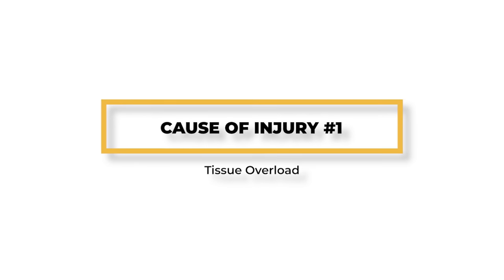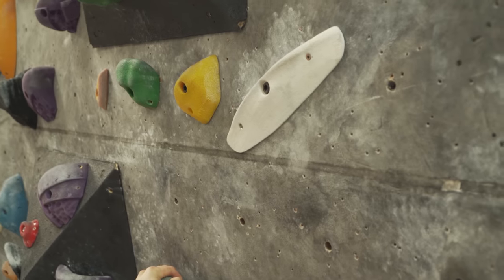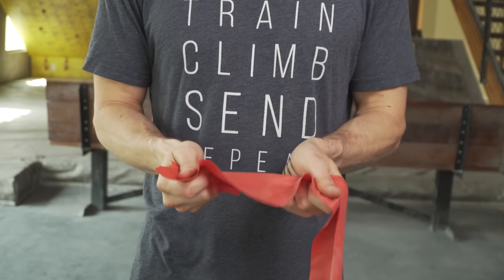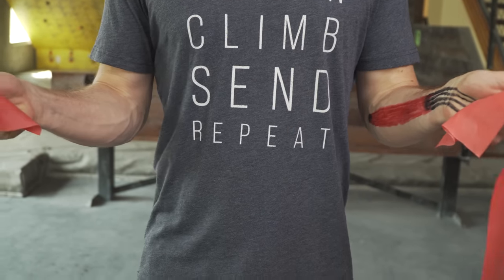So we know what the risk factors are, but how does the FDP actually get injured in the first place? There are three main causes. The most common cause of injury is simply exceeding the tensile strength of the FDP. This can happen when your foot blows off a hold, which suddenly transfers all that load to your fingers. It could also happen when you don't or can't get all of your fingers on a hold, meaning that the load can't be spread across your fingers. Either way, when the tissue gets overloaded, something's got to give — and in this case, that means the tissue tears to some extent.